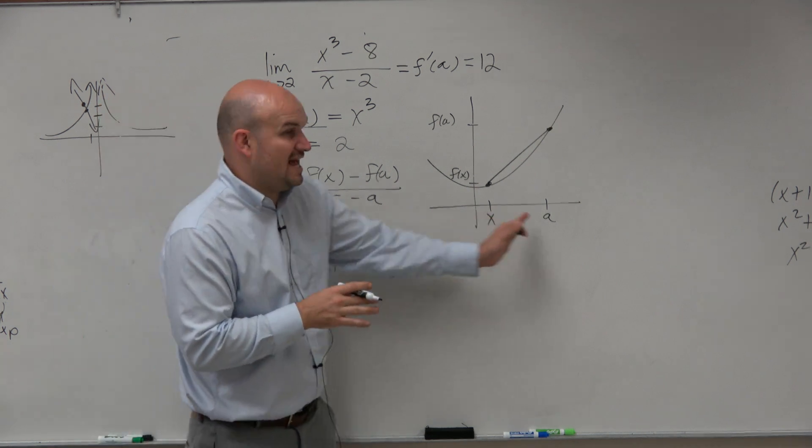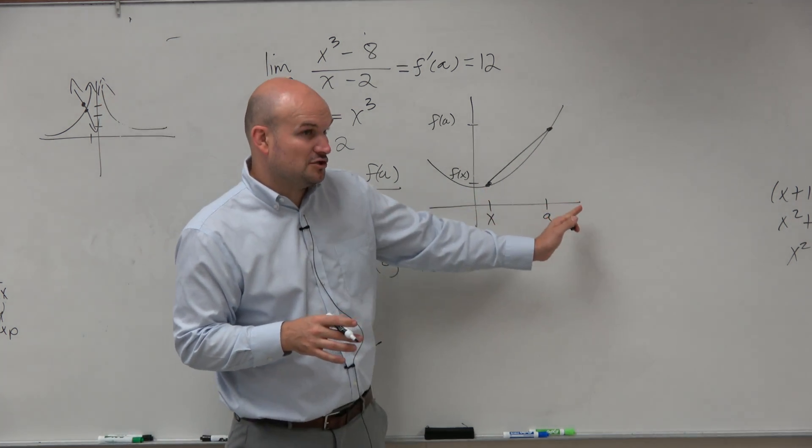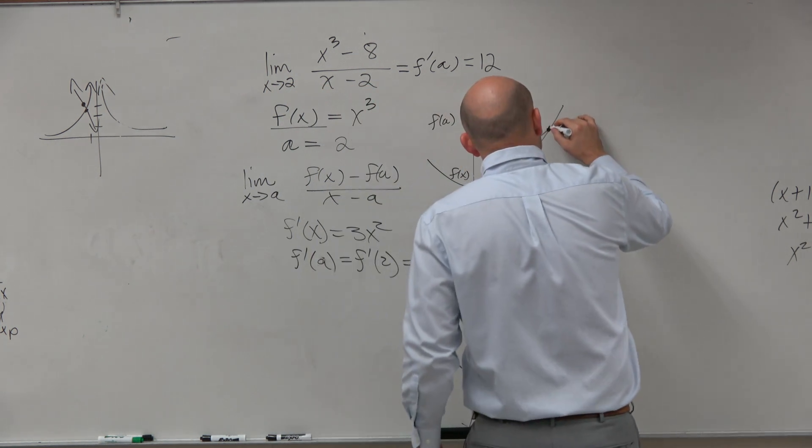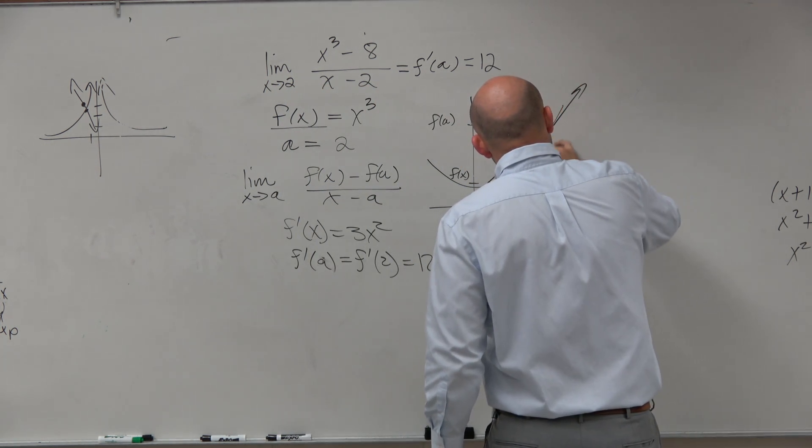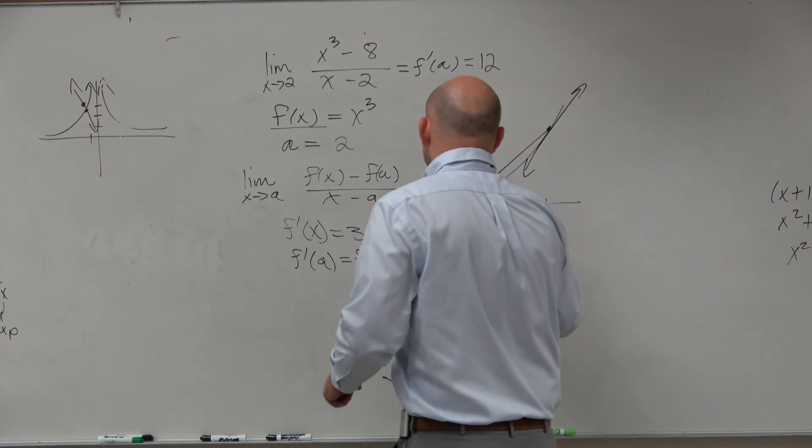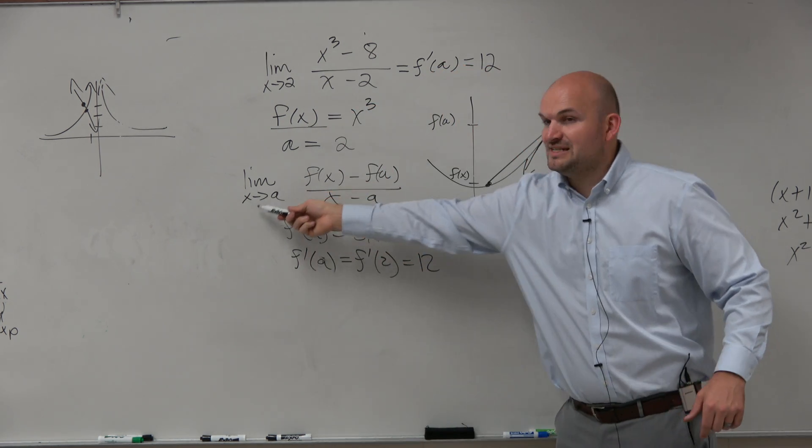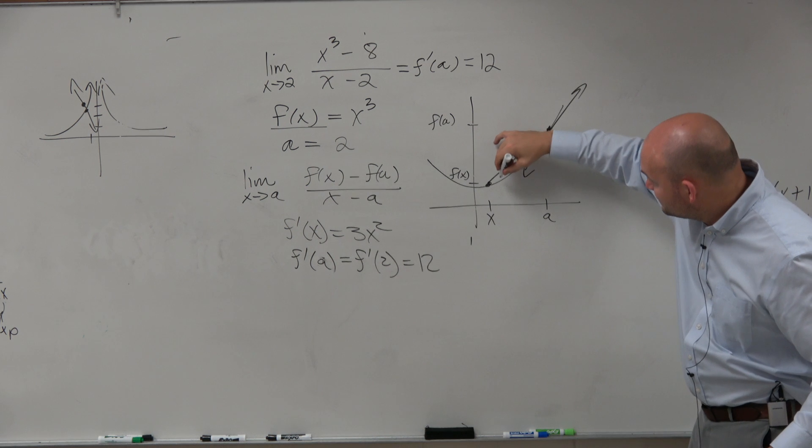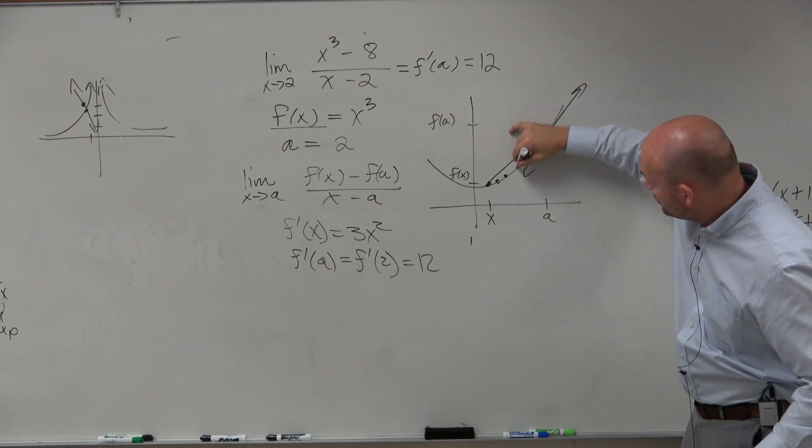So as x is approaching a, so as x gets closer and closer to a, what we're trying to find is the slope of that tangent line. So the limit as x approaches a means as these points get closer and closer to a.